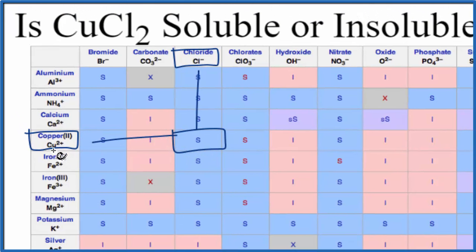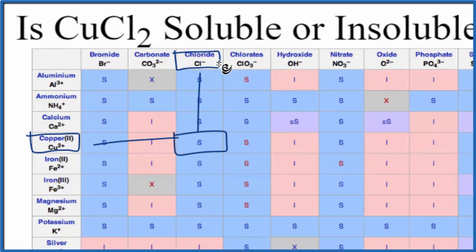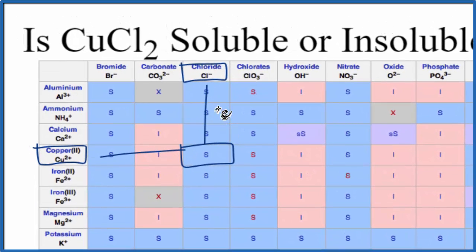We'll have the copper 2+ ion, and then we'll have two of the chloride ions, the Cl- ions, dissolved in water. They'll be aqueous, and we put AQ after them.